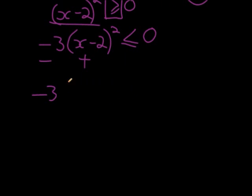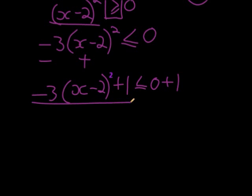Negative 3, (x minus 2), plus 1 on both sides, 0 plus 1 on both sides, now gives me that this is my y value. That's the whole f(x), so my y value, my output value, will be less or equal to 1.